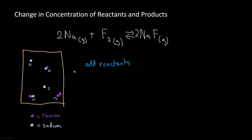As we add reactants — for example, if we add more sodium — there's now a much higher chance for sodium fluoride to be created, because there are more sodium atoms to collide with fluorine. Sodium fluoride is now being created at a faster rate, meaning the forward reaction is faster than the reverse reaction. So the equilibrium point shifts to the right.